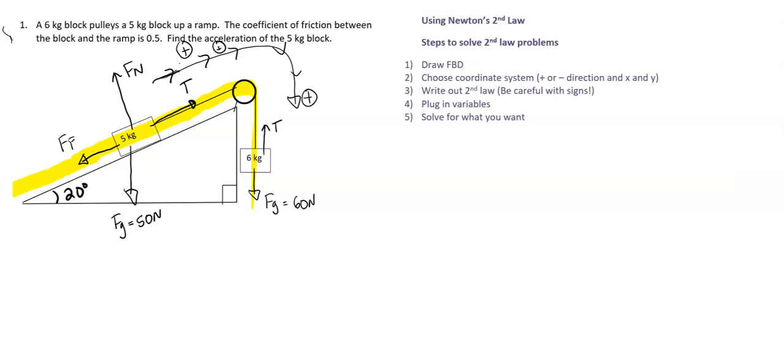So now let's see if we need to break any forces into their X or Y components. So right here for the 6 kilogram, gravity and tension are both in like the rope direction, which let's just call that the X direction. So we're good on that. For the ramp, okay, we have tension and FF in the X direction.